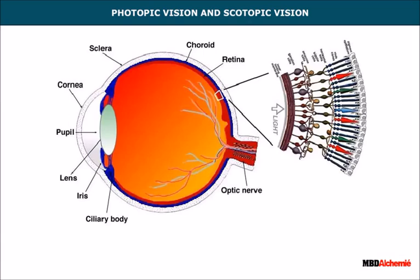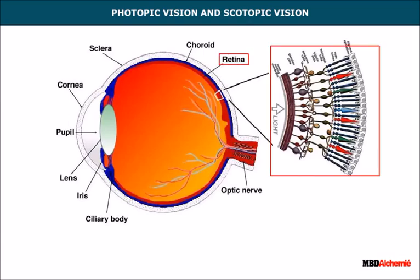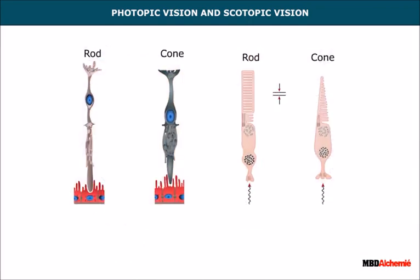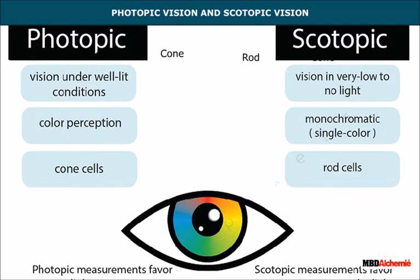The human retina has two types of receptors: cone-shaped and rod-shaped cells. The cones are responsible for color vision and the rods are responsible for sensing intensity. In bright light, the cones are active and the iris decreases the size of the pupil to prevent excess light from entering the eye — this is called photopic vision. When we enter a dark room, the size of the pupil increases to allow more light to enter — this is called scotopic vision.